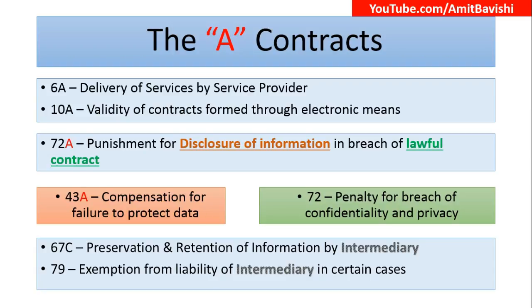6A is Delivery of Services by Service Provider — think of it as an AMC, Annual Maintenance Contract. 10A deals with the Validity of Contracts Formed through electronic means. What Section 10A discusses is that contracts will not be rendered invalid just because they are formed through electronic means. So 6A was the Delivery Contract, and 10A is for the Validity of Contract.